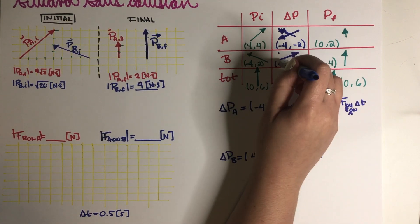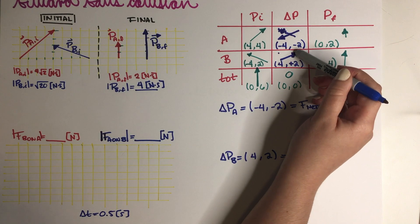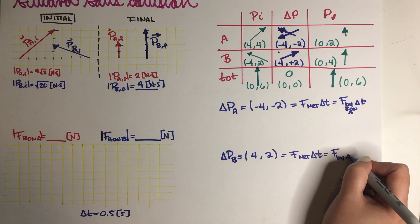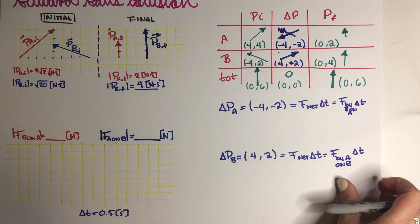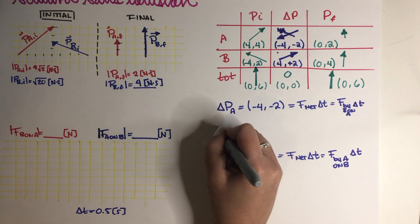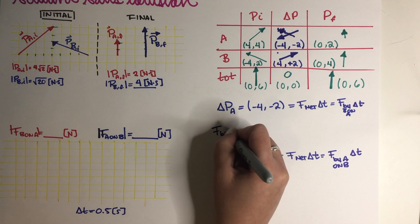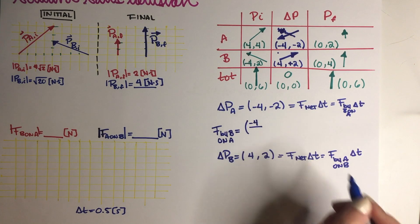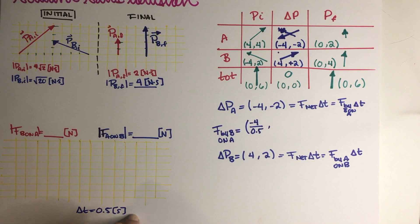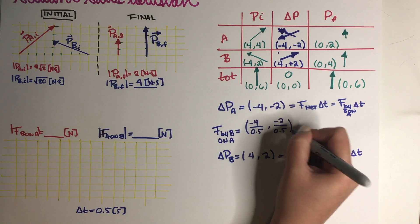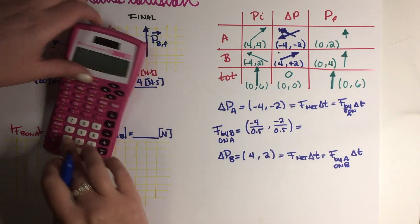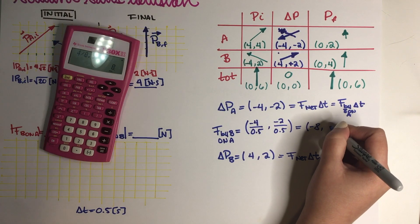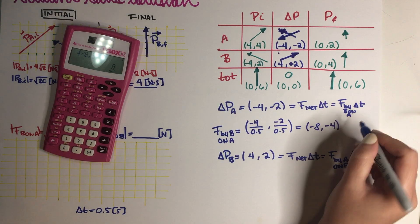So this is force by B on A times delta t. Again, the same goes for B. So if B is feeling a net force in this direction, then that means that A applied a force on B in this direction. So this is force by A on B times delta t. So I'm just going to go ahead and solve. So force by B on A is equal to negative 4 divided by delta t and delta t is 0.5. And on the y-axis, that would be negative 2 divided by 0.5.